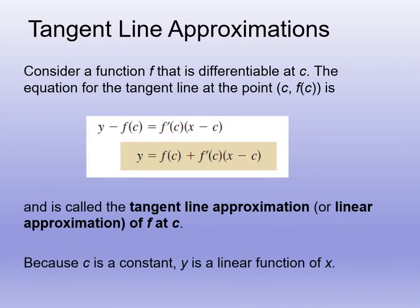So if we have a function f that's differentiable at point c, the equation of the tangent line at c is still just point-slope: y minus y₁ equals m times x minus x₁. Written in function notation, that's y minus f(c) equals f'(c) times (x minus c). Solving for y gives us y equals f(c) plus f'(c)(x minus c).